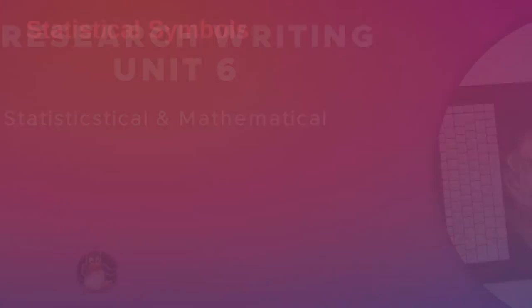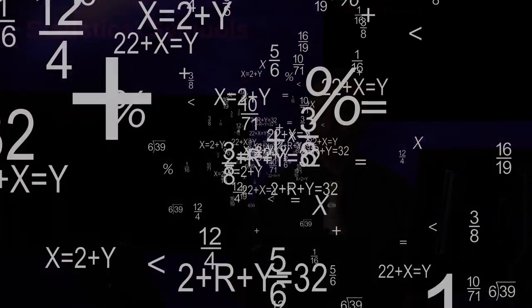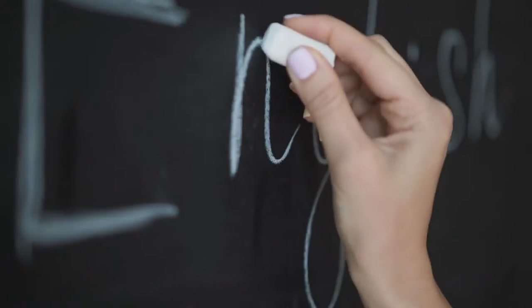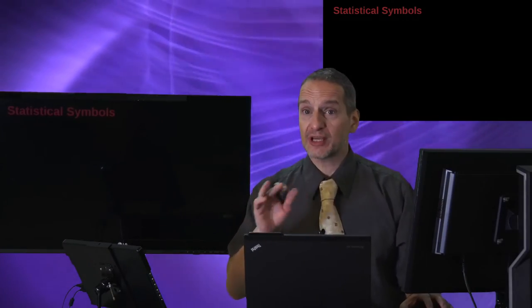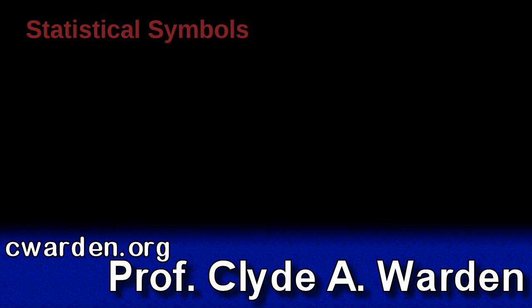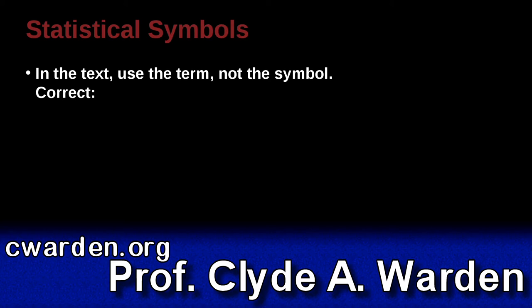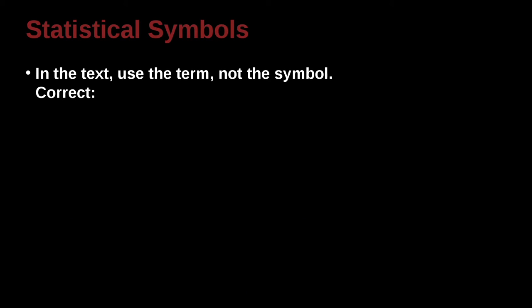For statistical symbols, the question is: should I use the symbol or should I put the English word inside of the text? Every area of research has their own symbols, though in statistics we have a lot that are in common. Here's a rule of thumb that the APA suggests: inside the text, you should use the word and not the symbol.